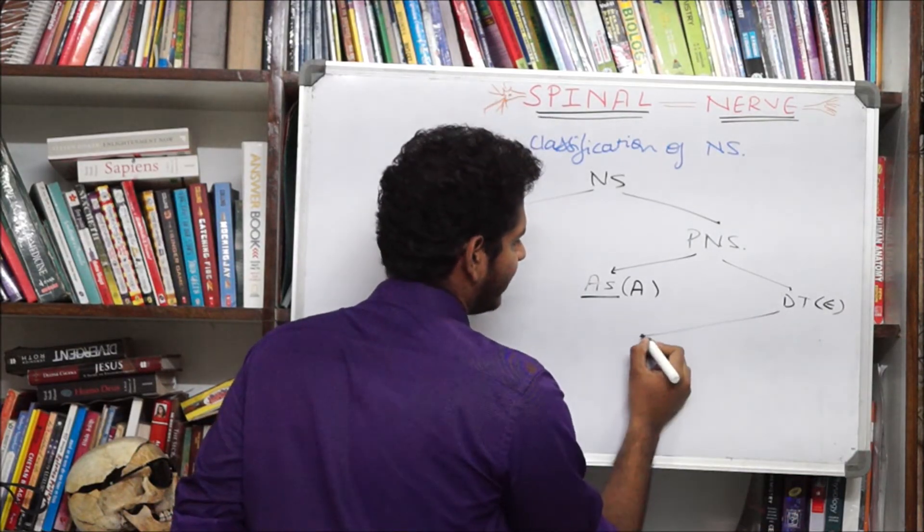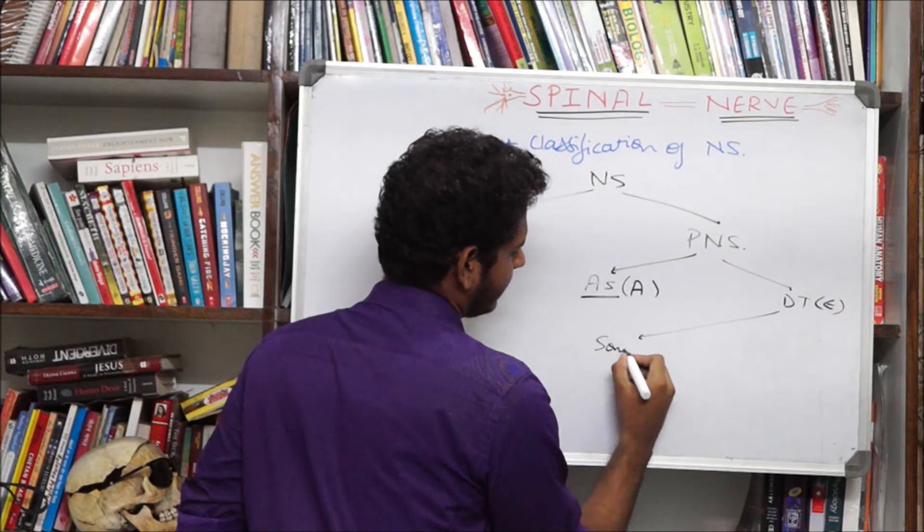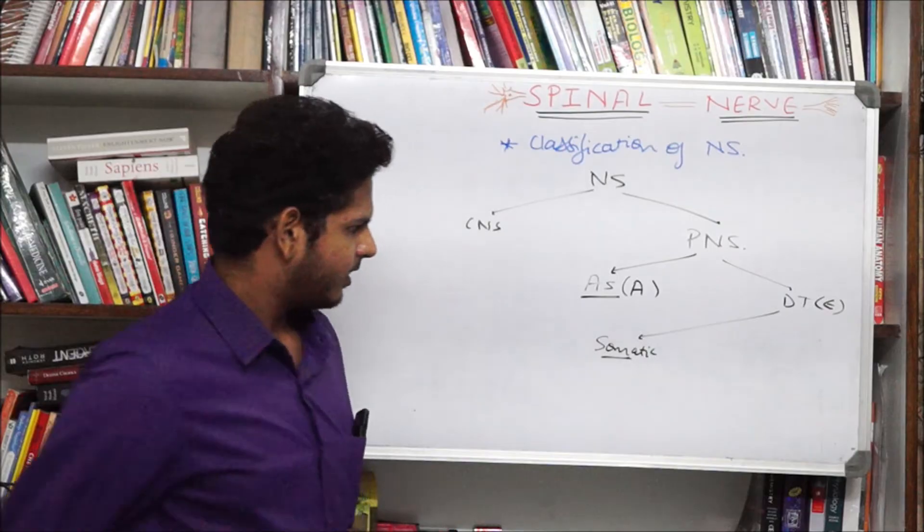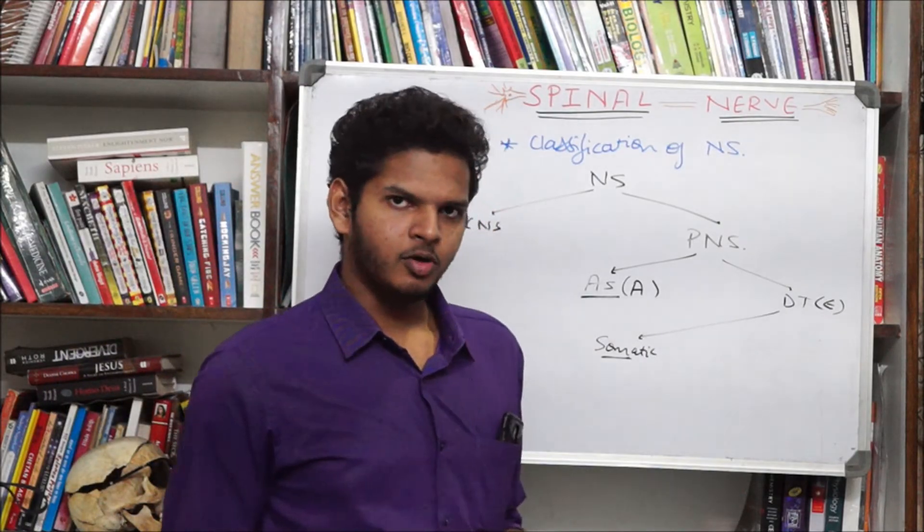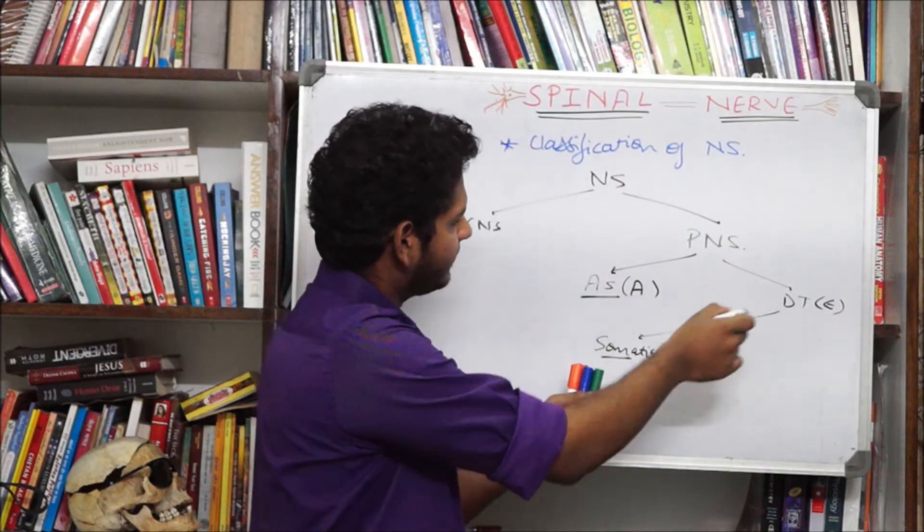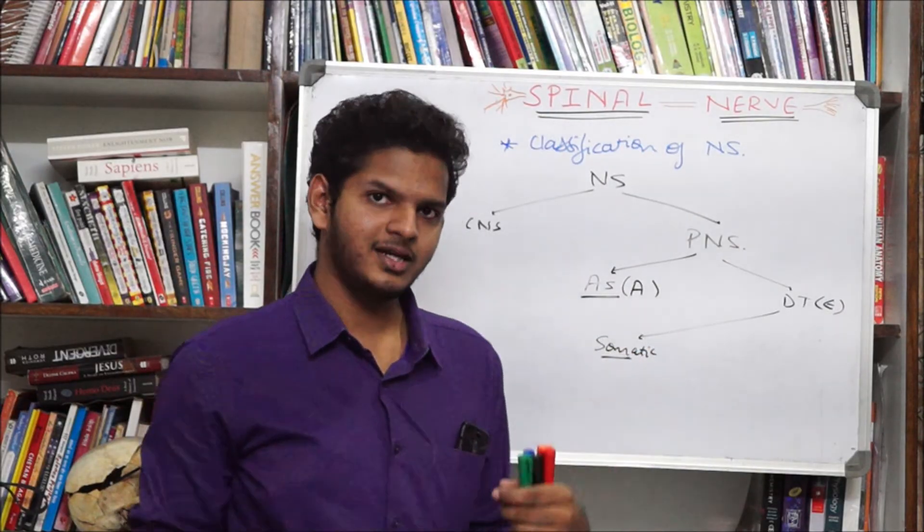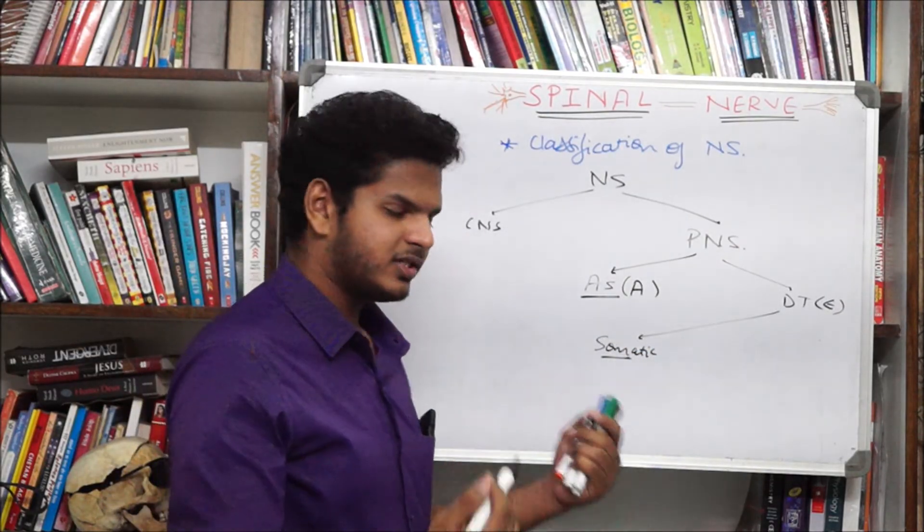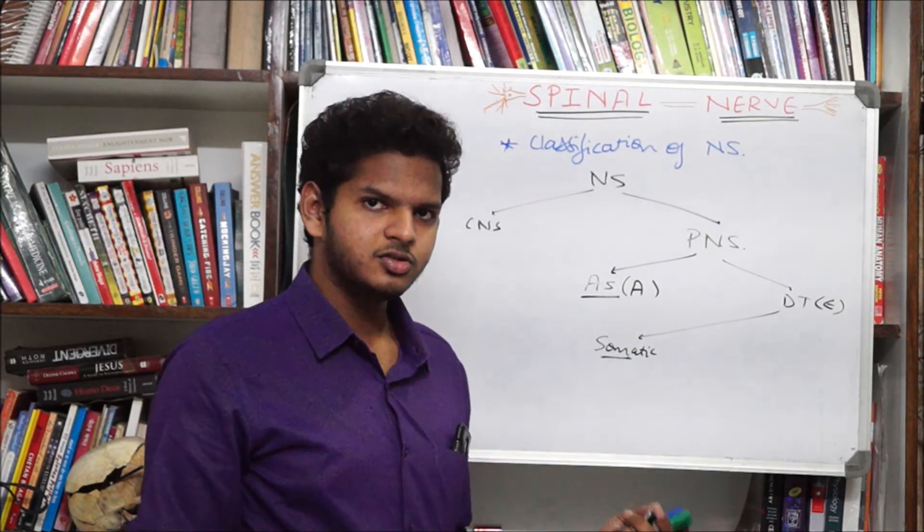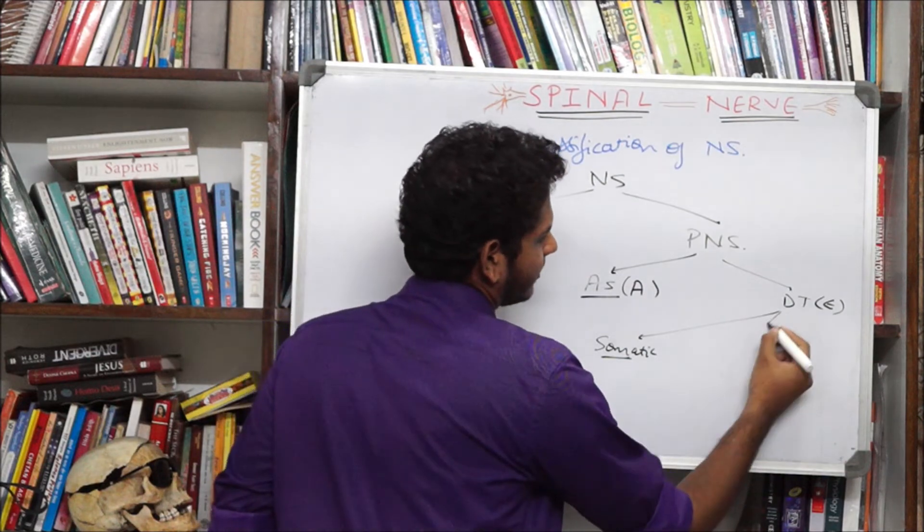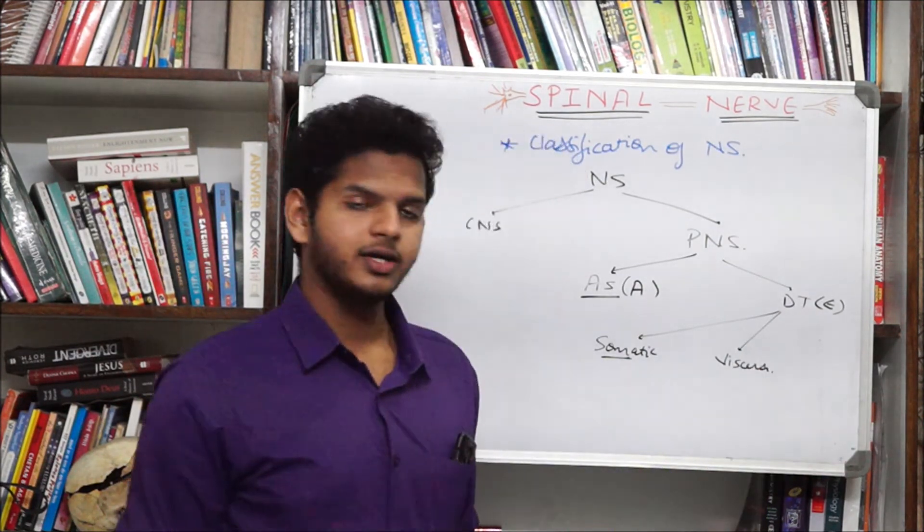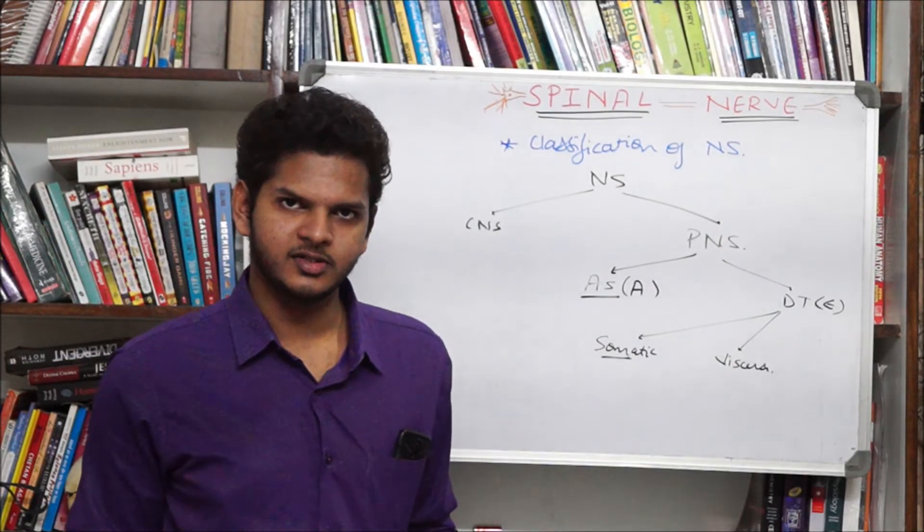The efferent pathway can be classified differently. It is classified further into types such as somatic. Somatic meaning body. Soma means body. So somatic means related to body which means that any information from the CNS will end up affecting different non-visceral things such as muscles and different kind of structures. We have the thing that innervates the viscera. Viscera is the organs. Any organ is known as viscera.